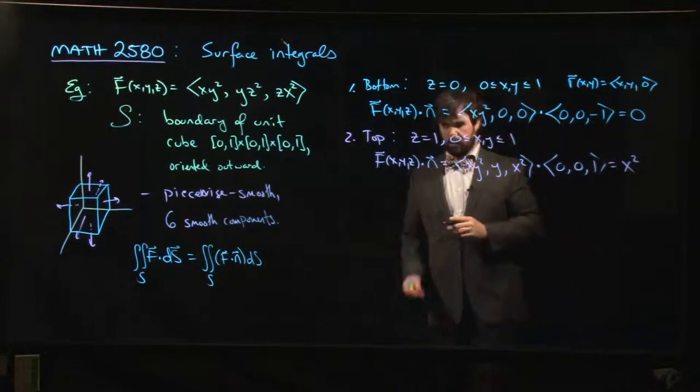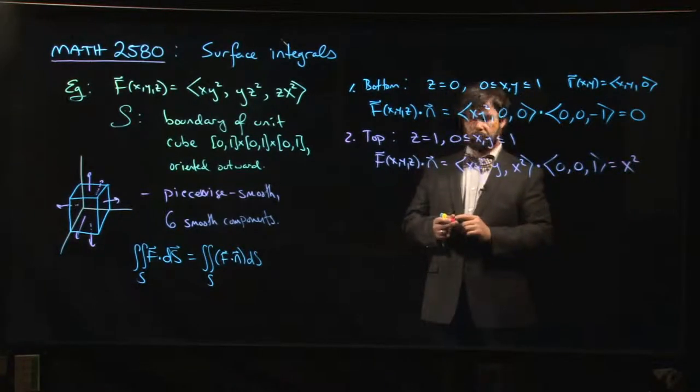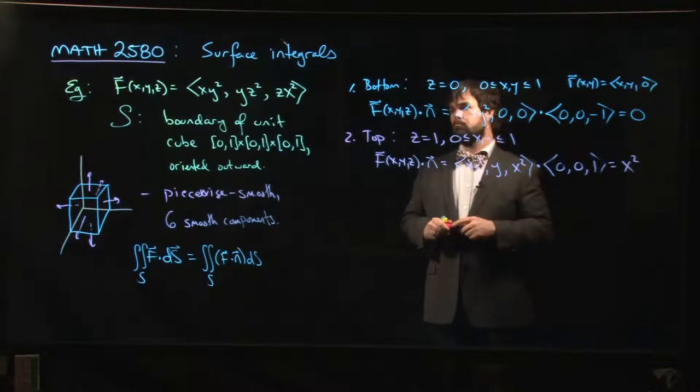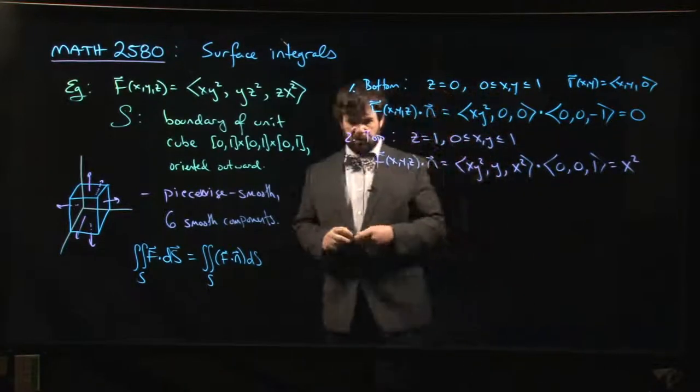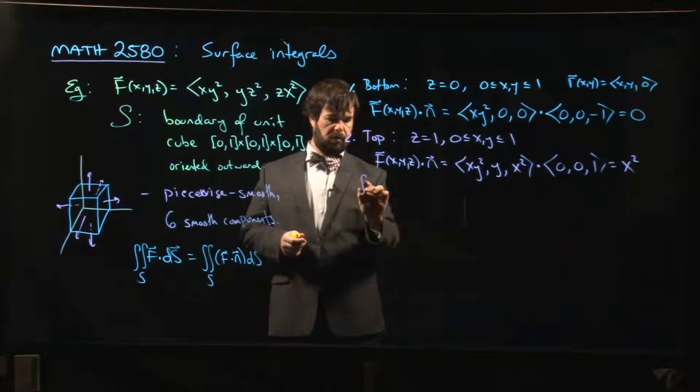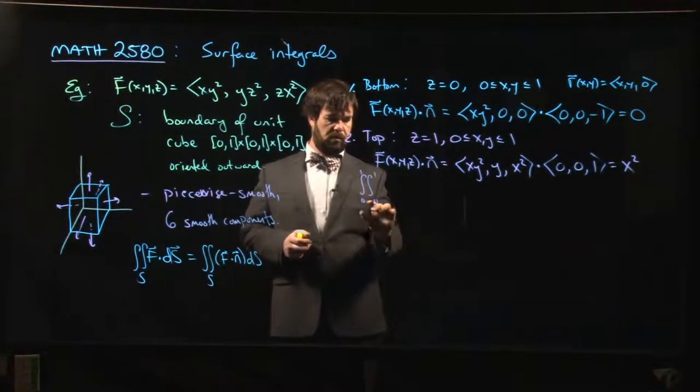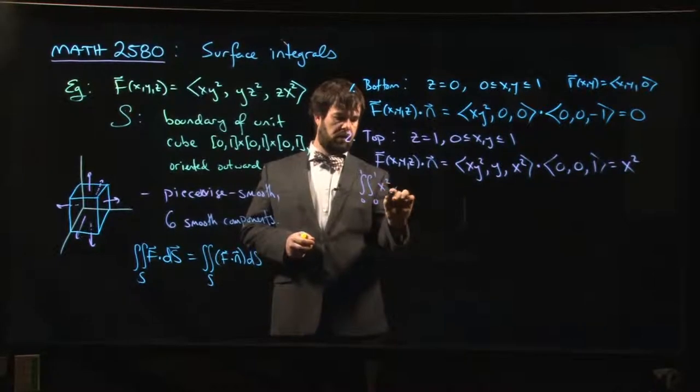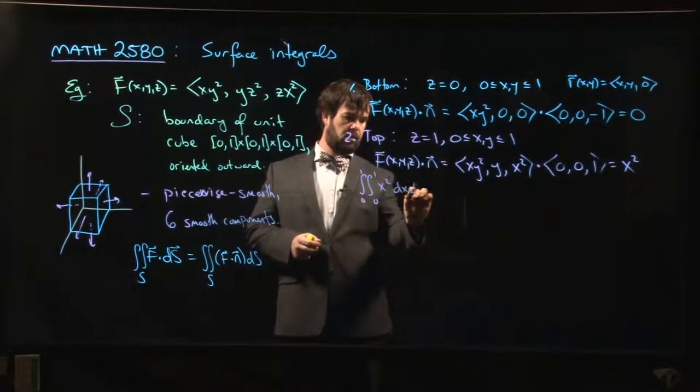So we simply get x² here. And we can say that what we've got then is the integral from zero to one, zero to one, x² dx dy, which is simply one third.